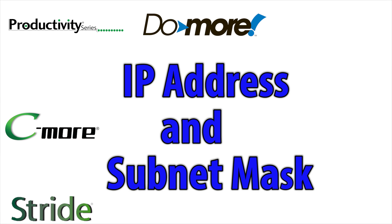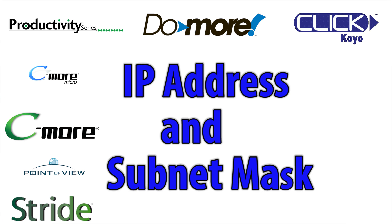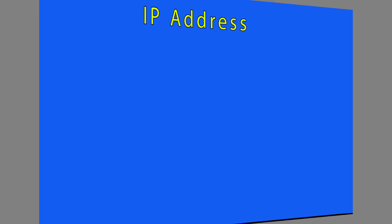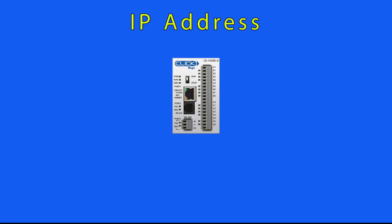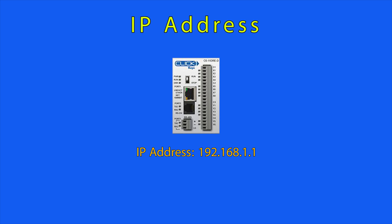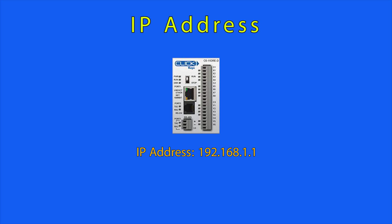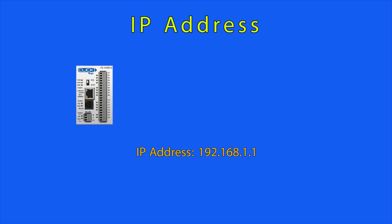With more AutomationDirect products being Ethernet capable, what do we need to know to get your network up and running? Let's start by describing some of the components of an IP address. So we have this PLC that has the following IP address. We can see that this address is made up of four number groups, separated by decimal points. Each of these groups can be a possible number range of 0 to 255.